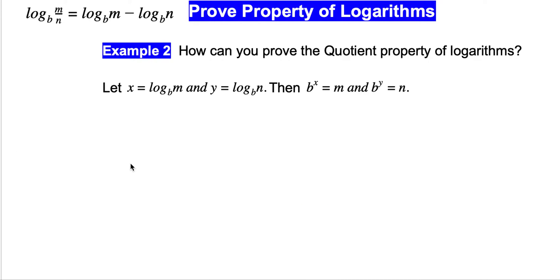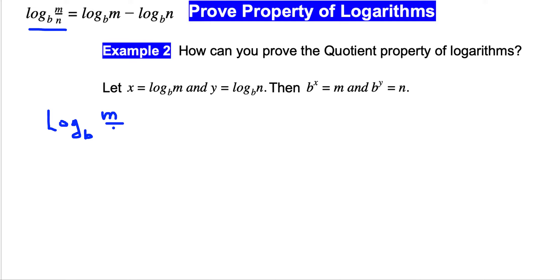Let's try and prove it. We have log base b of m over n is equal to log base b of m minus log base b of n. Let's take a pen and start. So we're given: log base b of m over n. This is given.